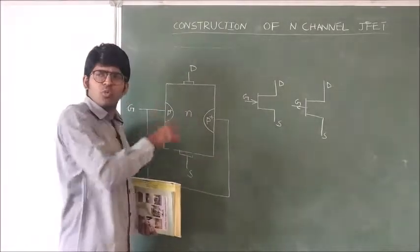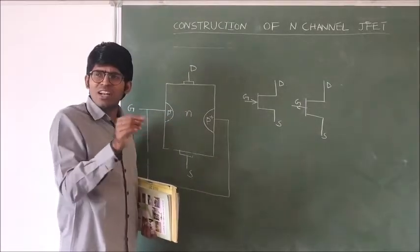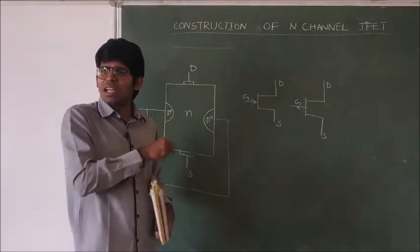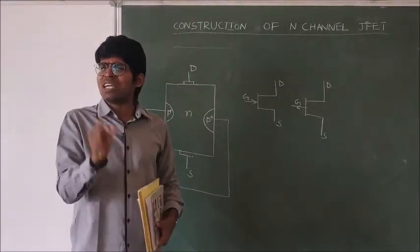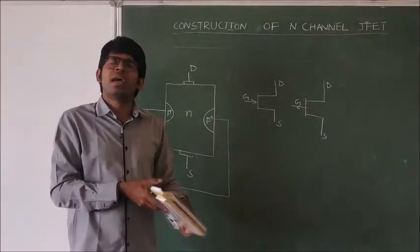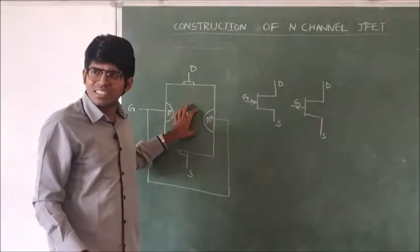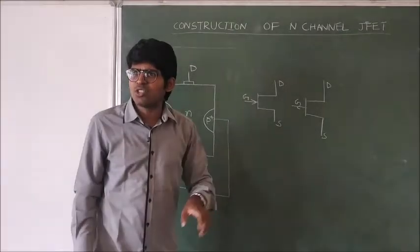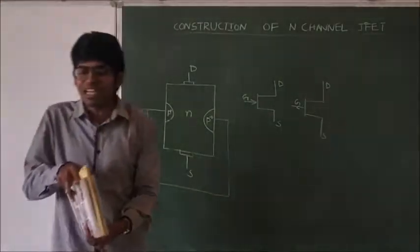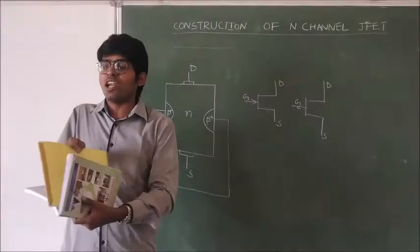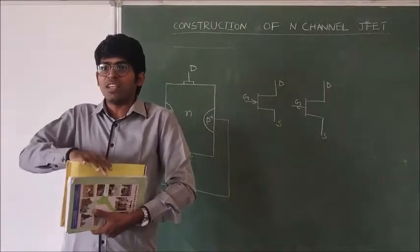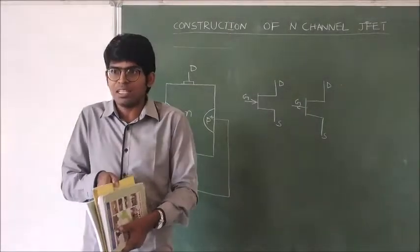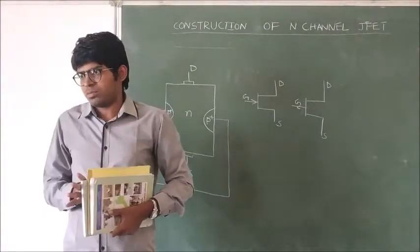Whenever the carriers are moving, the channel width changes. In the future you can understand this diagram is very easy to understand the concept. The N-channel JFET is formed by joining an N-type semiconductor between two P-plus regions, and they have almost equal size.